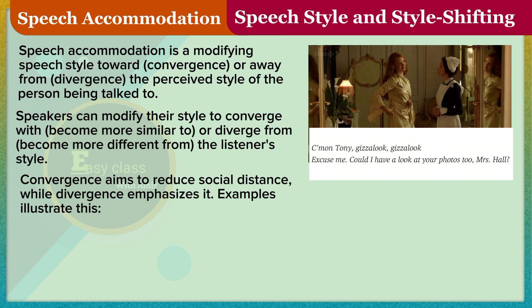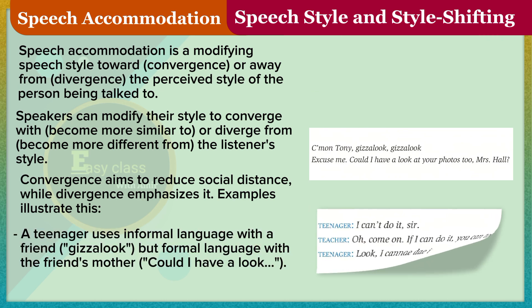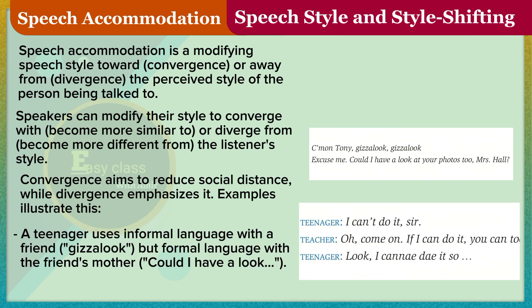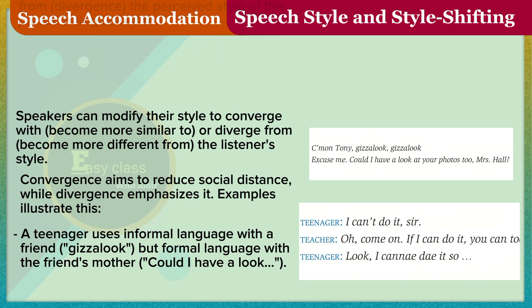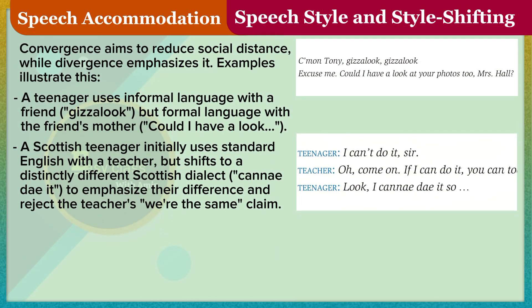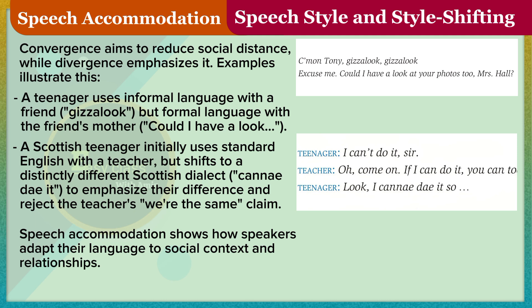Examples illustrate this: a teenager uses informal language with a friend ('gizalook'), but formal language with the friend's mother ('could I have a look'). A Scottish teenager initially uses standard English with a teacher, but shifts to a distinctly different Scottish dialect ('canny deit') to emphasize their difference and reject the teacher's 'we're the same' claim. Speech accommodation shows how speakers adapt their language to social context and relationships.